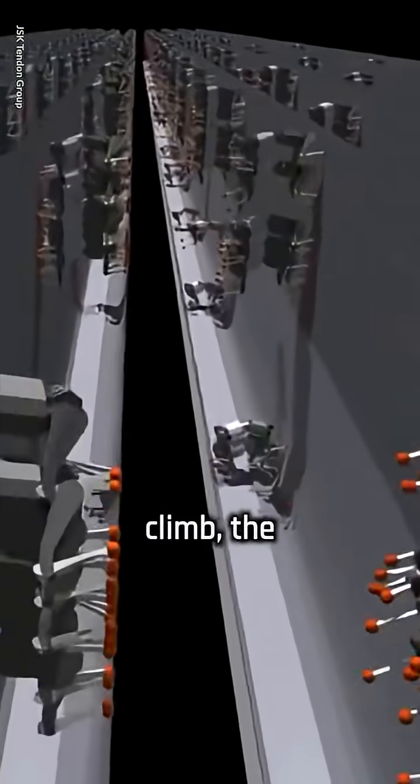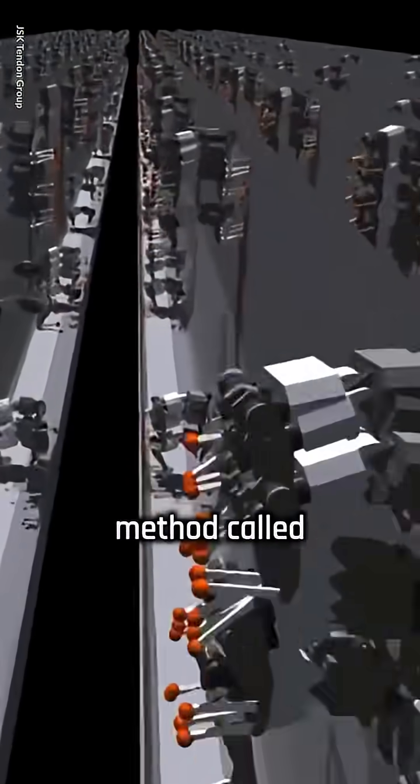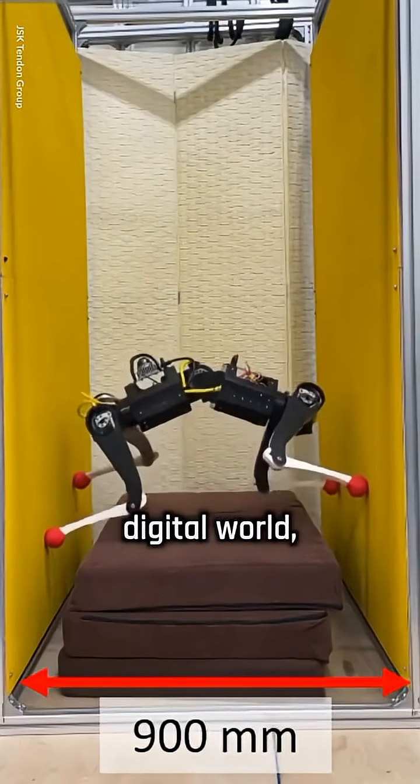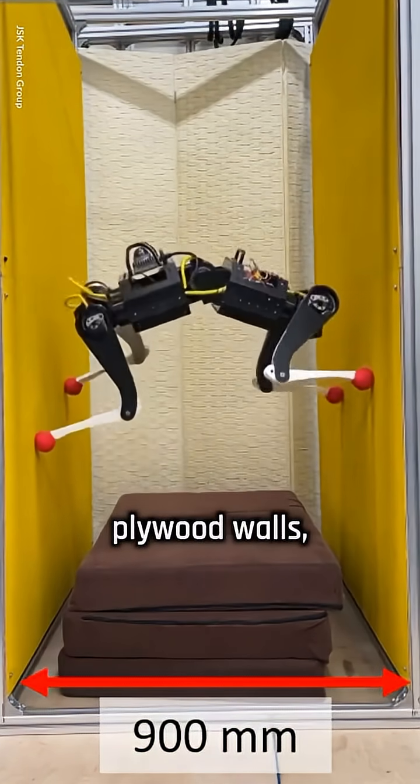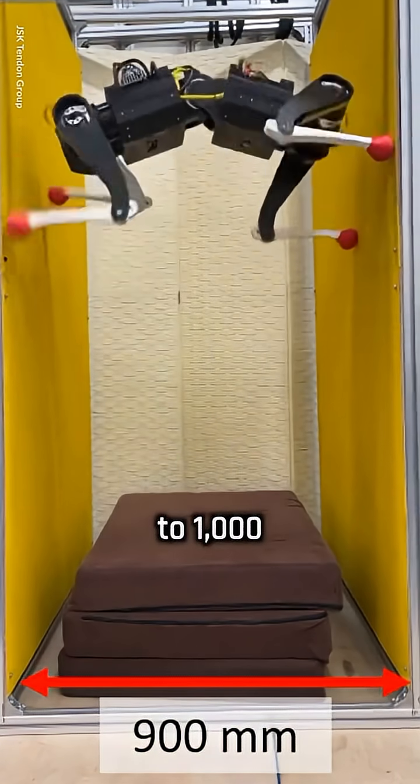To teach it how to climb, the team used a virtual training method called Contact Guided Curriculum Learning. They trained it in a digital world, then tested it on real plywood walls spaced 800 to 1,000 millimeters apart.